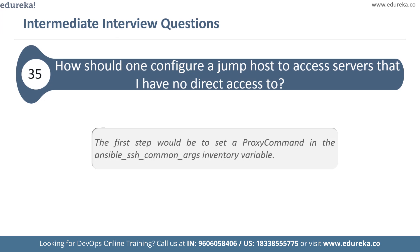The next question is: how should one configure a jump host to access servers with no direct access? The first step is to set a proxy command in the ansible_ssh_common_args inventory variable. All arguments defined in this variable are added to the sftp, scp, and ssh command lines when connecting to the relevant host.